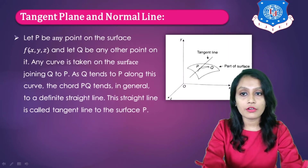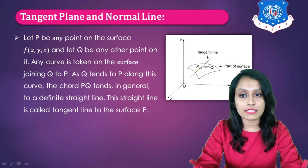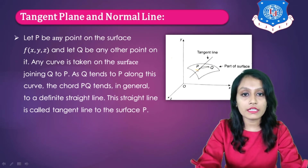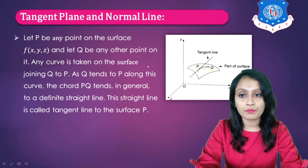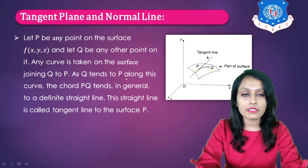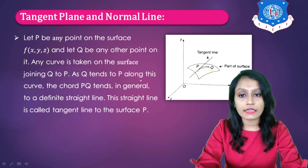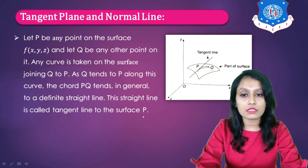Let P be any point on the surface f of x, y, z. Here you can see a point P on a surface f(x, y, z). Let Q be any other point on it. Any curve is taken on the surface joining Q to P. As Q tends to P along this curve, the chord PQ tends in general to a definite straight line, and this straight line is called the tangent line to the surface at P.